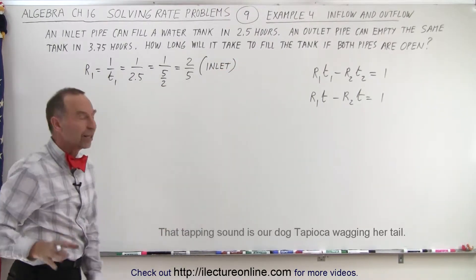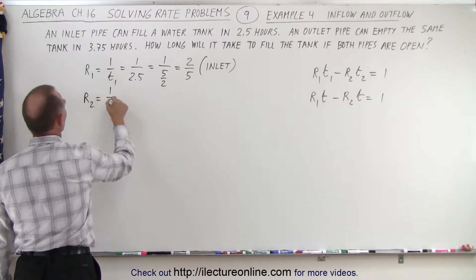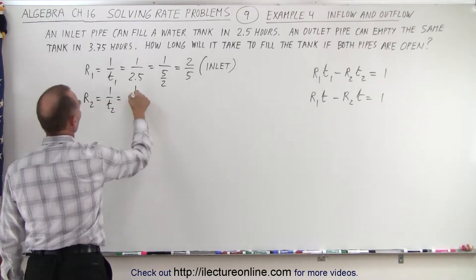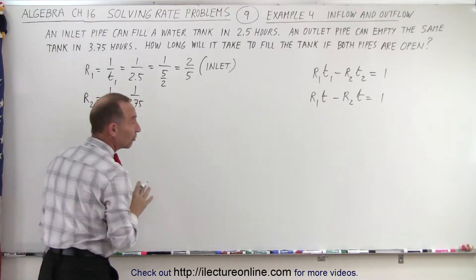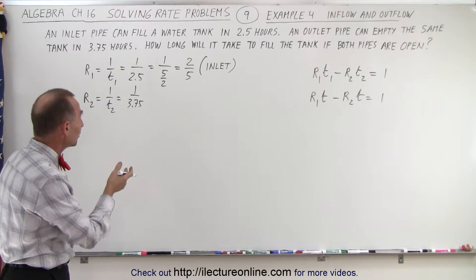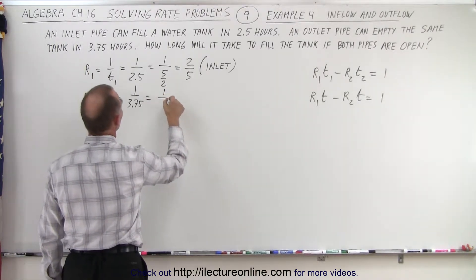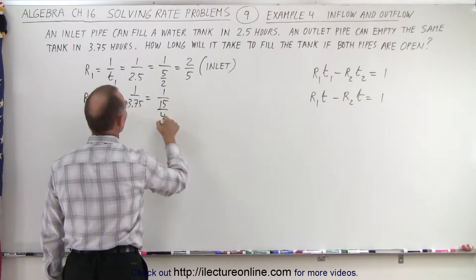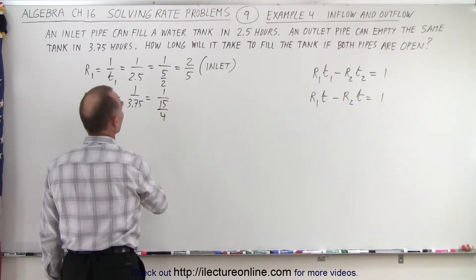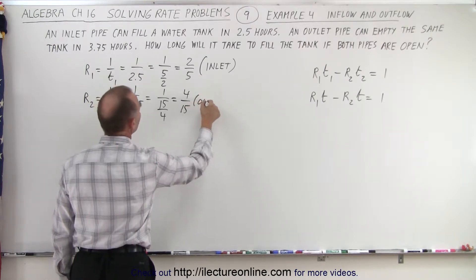Now the rate for the outlet pipe. So R2 is equal to 1 over T2, which is equal to 1 over 3.75. Again, it's better to write it in fractional form. So that would be 15 over 4. So that would be equal to 1 over 15 fourths, because 4 goes into 15 three and three-quarter times. So that would be 4 over 15. That would be the outlet pipe.